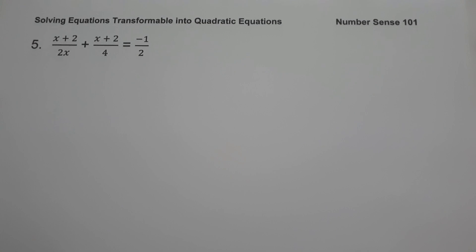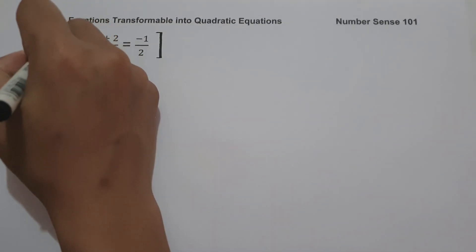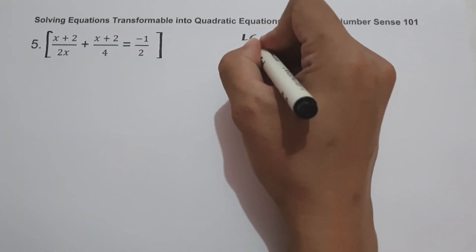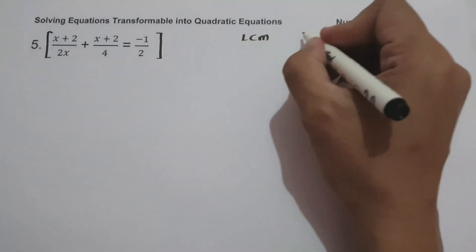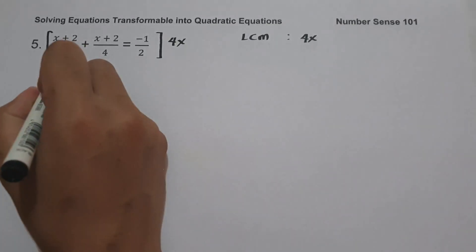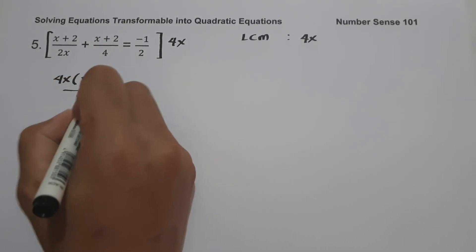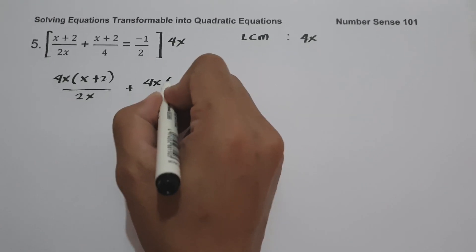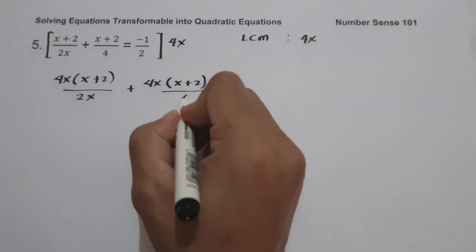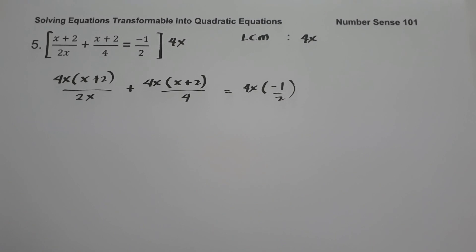On our last example, we have (x plus 2) over 2x plus (x plus 2) over 4 equals negative 1 over 2. The first thing we'll do is multiply the whole equation by the LCM of 2x, 4, and 2, which is 4x. Multiplying through by 4x gives 4x times (x+2)/2x plus 4x times (x+2)/4 equals 4x times negative 1/2.